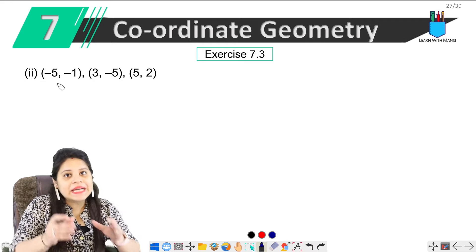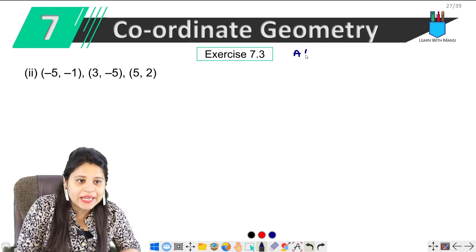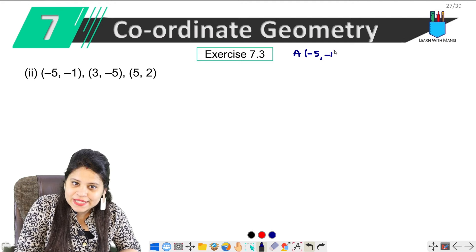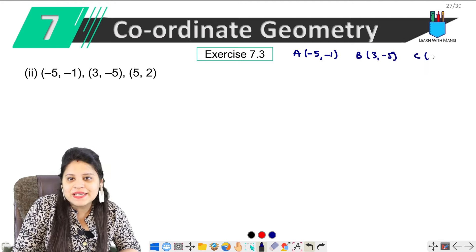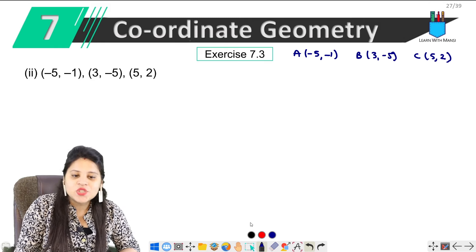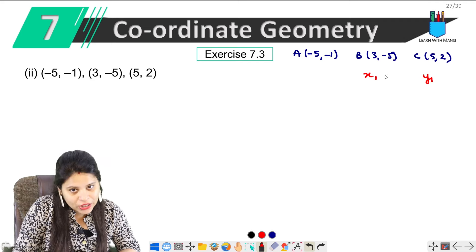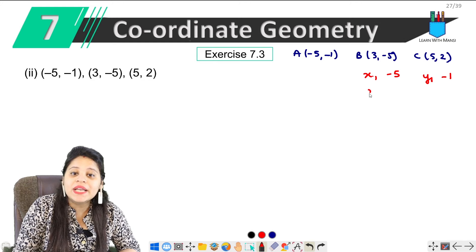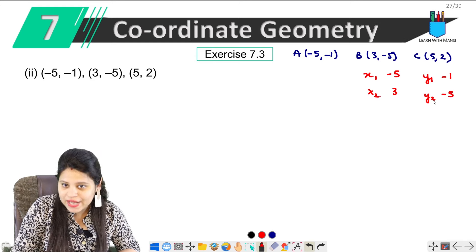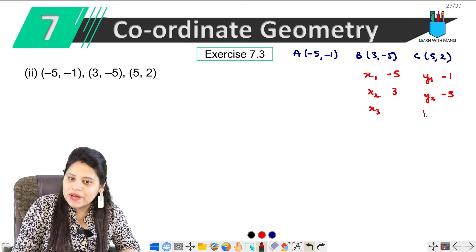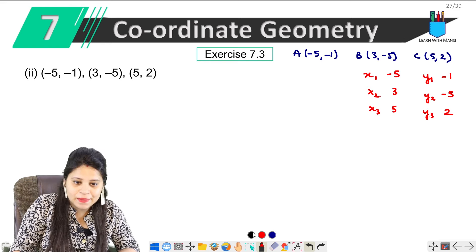Now, coming to the second part. Again, we have 3 vertices. Area of triangle is to be found. So, we have A(-5, -1), B(3, -5) and C(5, 2). Here we have values. x1, y1 will be equal to A coordinates, which means minus 5, minus 1. x2, y2 will be equal to 3 and minus 5. And x3, y3 will be equal to 5, 2.